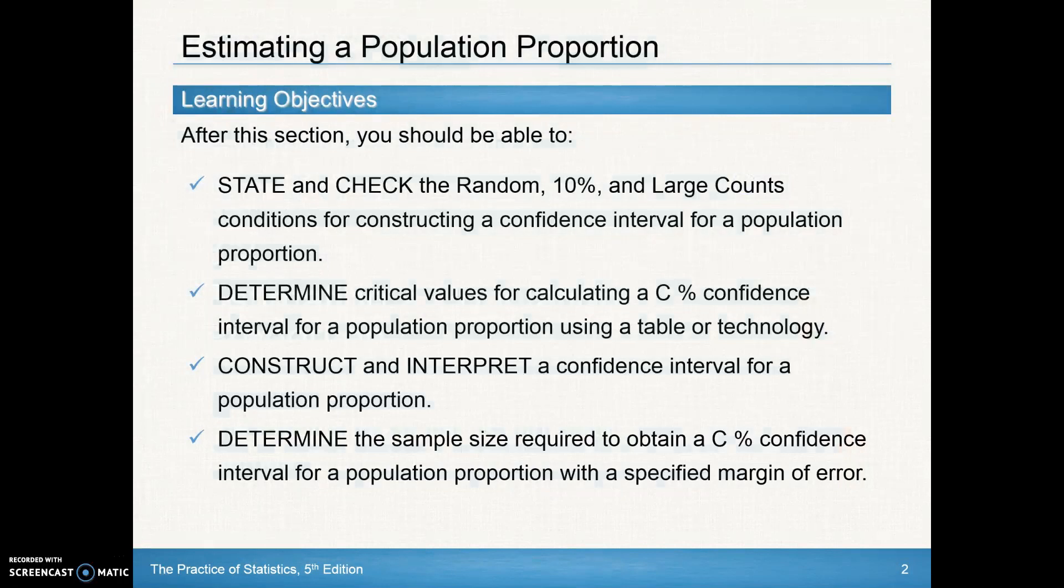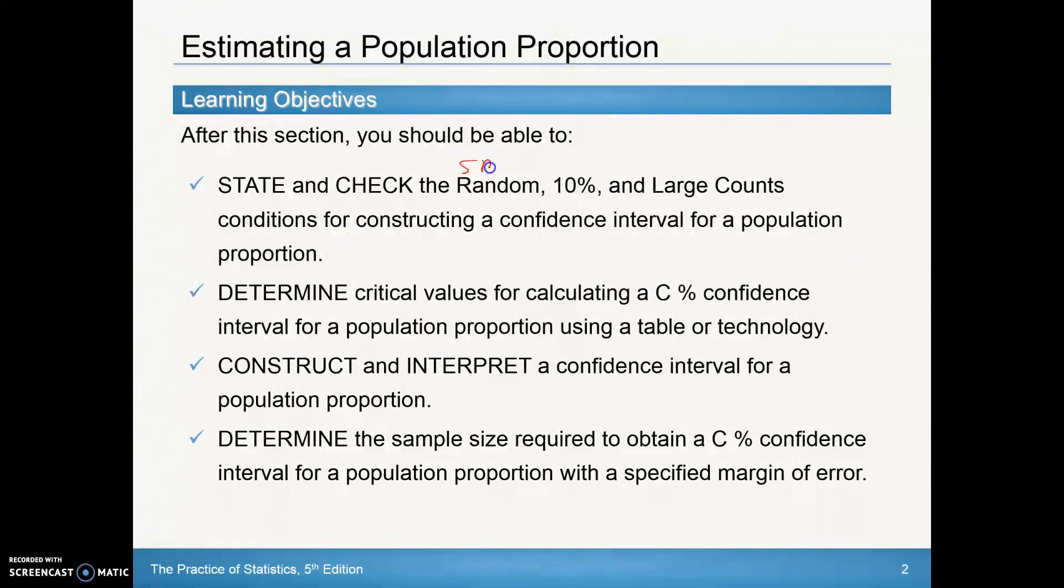These are the learning objectives. After this section, you should be able to state and check the random, 10%, and large count conditions for constructing a confidence interval for a population proportion. Basically, this is a simple random sample. The 10% condition is 10 times the sample size has to be less than or equal to your population. And the large counts will depend on whether you're dealing with means or proportions. In this section, we're dealing with proportions, so we'll be looking at n times p being greater than or equal to 10 and n times q being greater than or equal to 10.